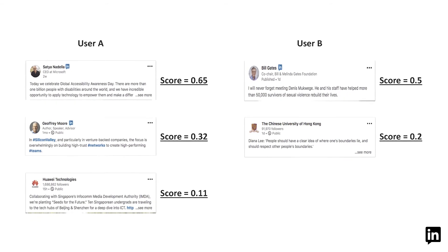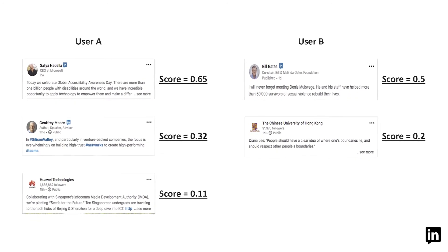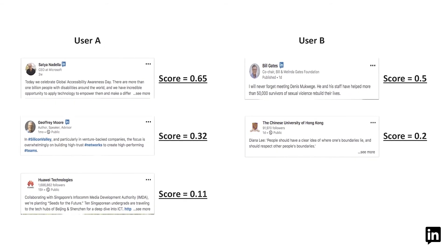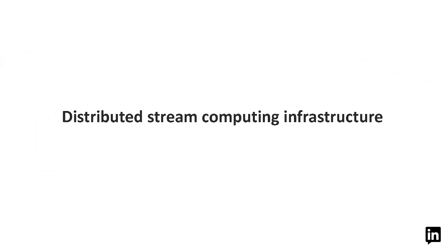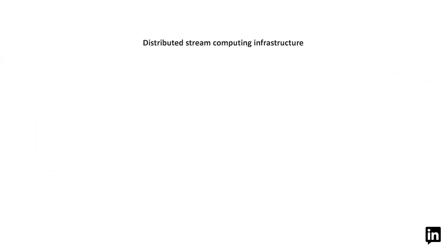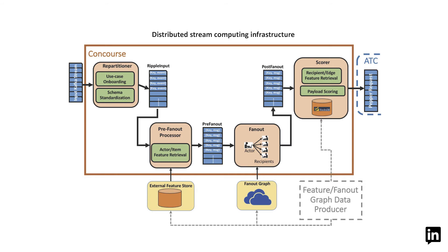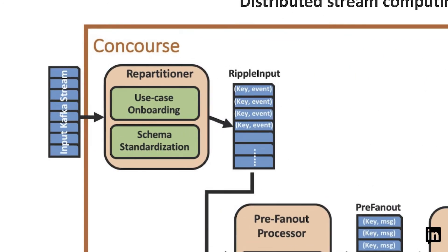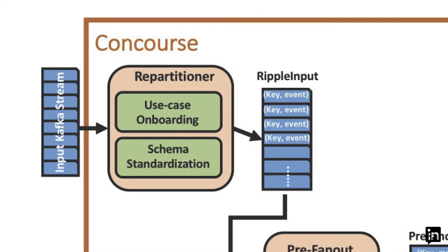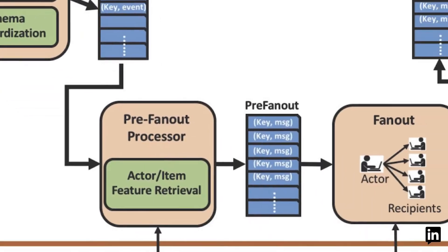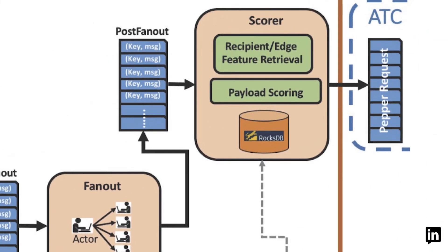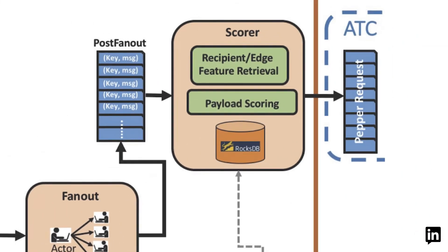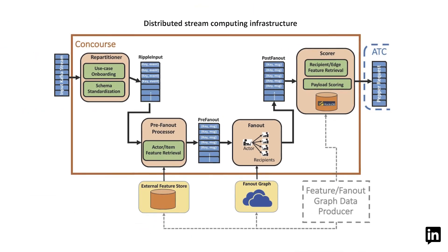The multi-objective optimization approach can be personalized to choose notification thresholds for each user. This means that even if some of our members have a lot of engaging activity in their network, we only notify them of the best conversations. Notification candidate generation, scoring, and optimization is powered through a custom nearline infrastructure built on top of Samza, a distributed stream processing framework.